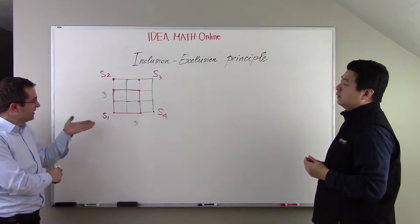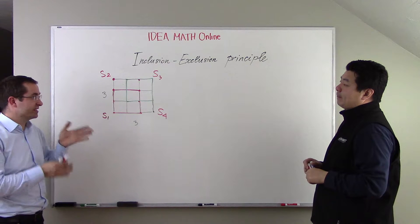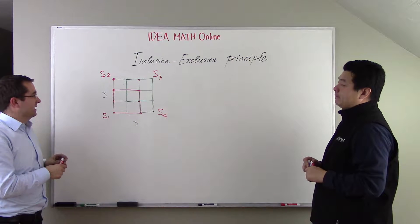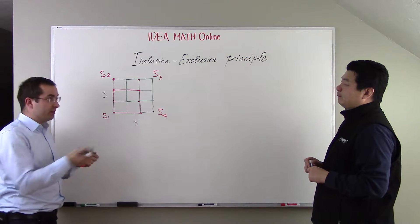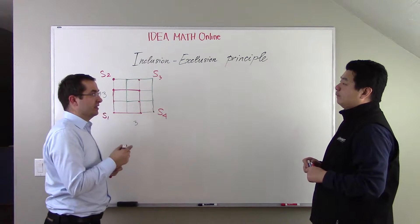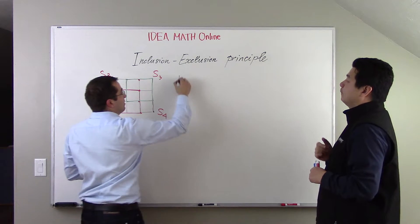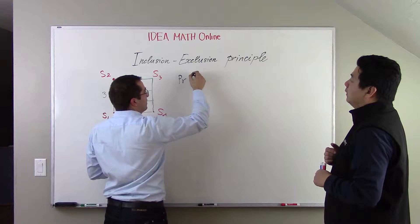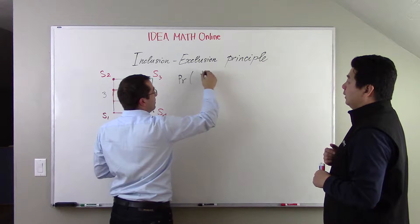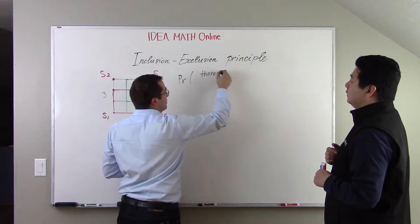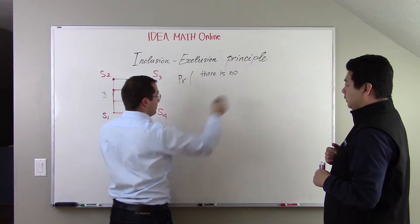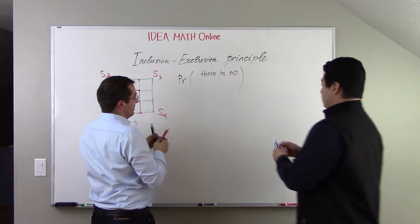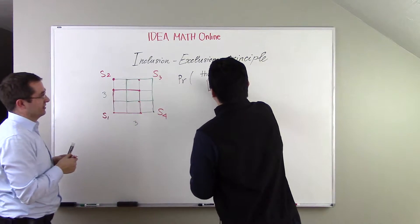So we have a 3x3 grid, we color it into colors blue and red. What's the probability that we are looking for? That there is no 2x2 square. There is no 2x2 square.